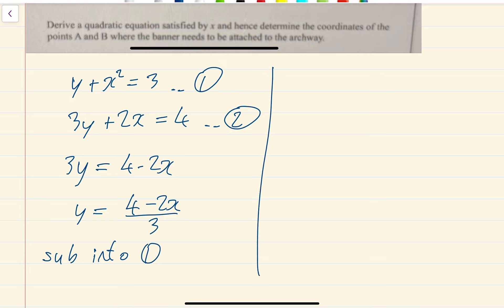And what I'm going to do with this is sub it into equation 1. So everywhere you see y in equation 1, I'm going to replace it with 4 minus 2x all over 3. So that becomes 4 minus 2x all over 3 plus x squared is equal to 3.